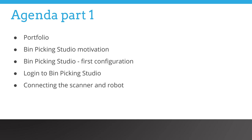We will start by positioning Bin Picking Studio in the portfolio of Photo Neo products. Next we will explain the motivation for the creation of this unique tool, and immediately following we will explain the first steps in the solution configuration. Today we will be able to cover topics on how to log into the software and the basic instructions on how to connect a scanner and the robotic manipulator.